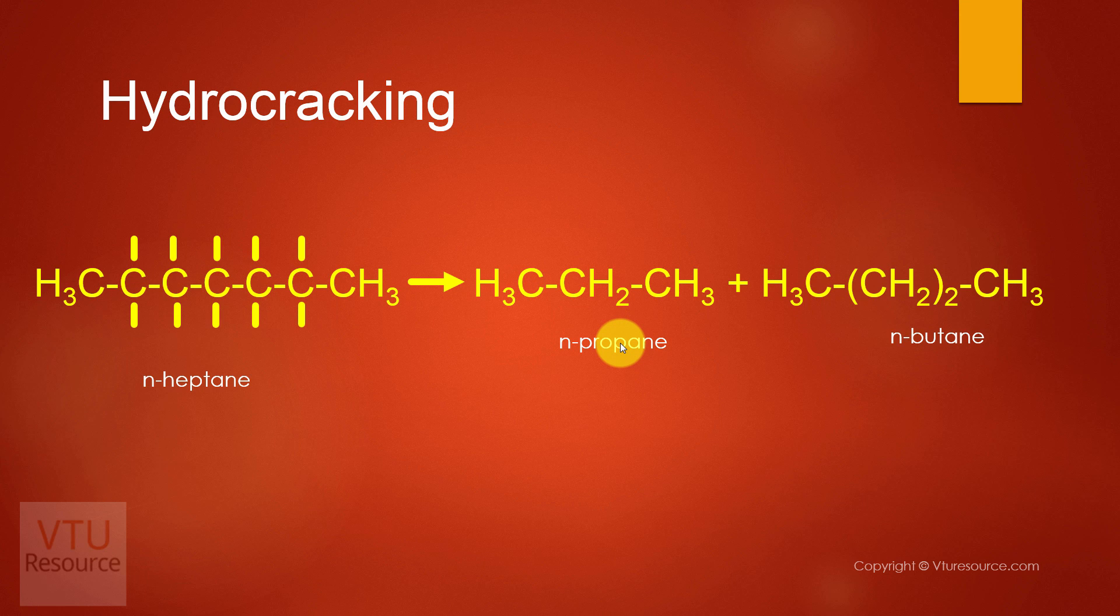So reformation carries how many processes? Four processes. That is where straight chain hydrocarbons are converted to branched chain, cyclic, and aromatic. So in hydrocracking, higher molecular weight hydrocarbons are converted to light gases. So a question will be asked in university examination: explain how octane number can be enhanced. A simple answer, octane number can be enhanced by a process known as reformation. Just this simple line carries one mark.